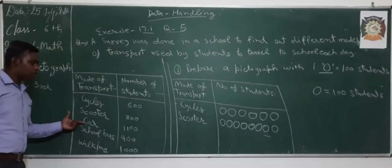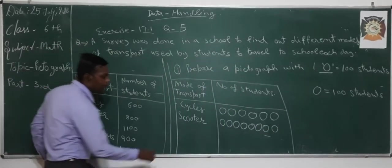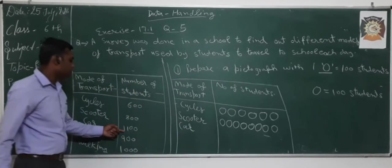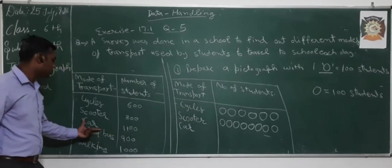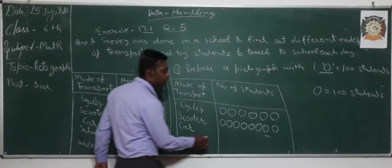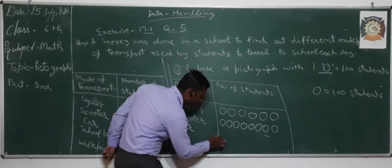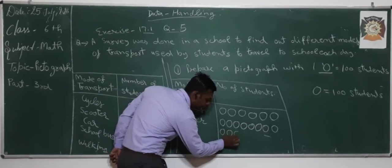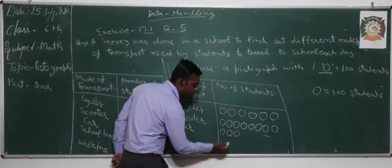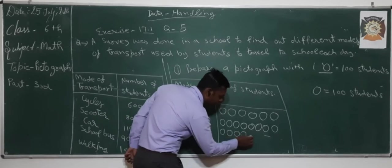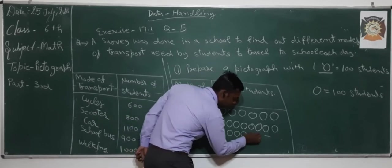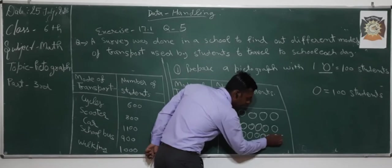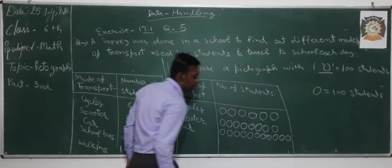Next is car — 1100 students use a car. So we have to represent 1100 with 11 circles.